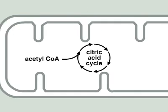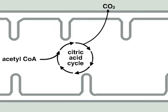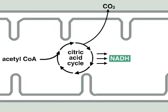In this circular reaction path of the citric acid cycle, carbon atoms are burned — that is, oxidized — and released one by one as the waste product carbon dioxide. In this way, energy is released stepwise and captured by energy carriers, including NADH.